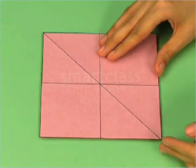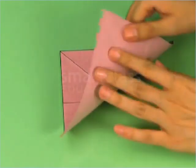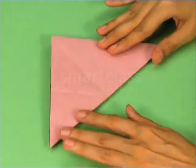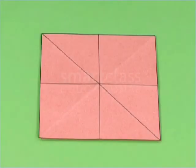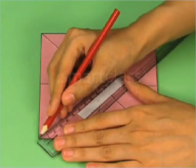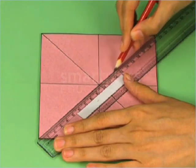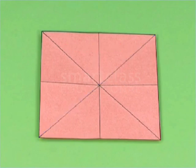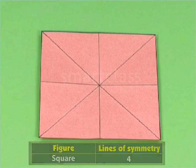Now, fold the square along the other diagonal so that its two parts exactly overlap each other. Unfold the square to get a crease and draw a line on the crease. This line is the fourth line of symmetry of the square. We cannot fold the square in any other way so that its two parts exactly overlap each other. The square has four lines of symmetry.